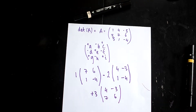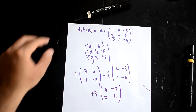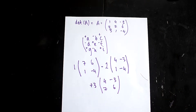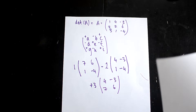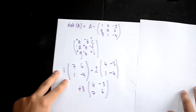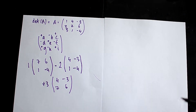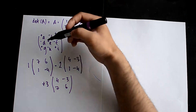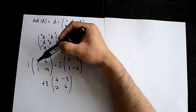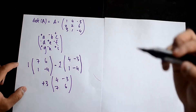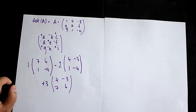In a previous video, I went over how to do a 2x2 matrix. You need to know the rule: a 2x2 determinant is this element multiplied by this, minus this element multiplied by this — i.e., (ad − bc).